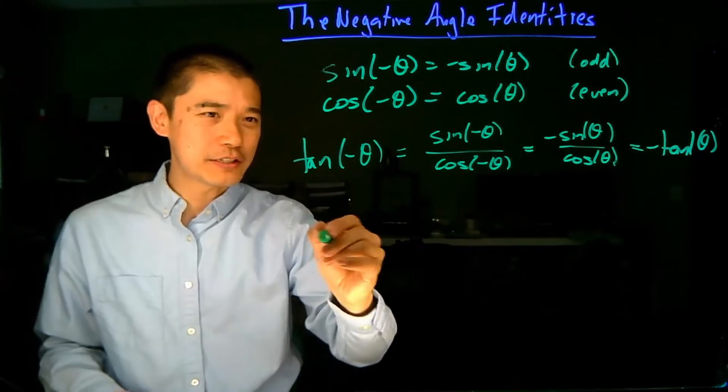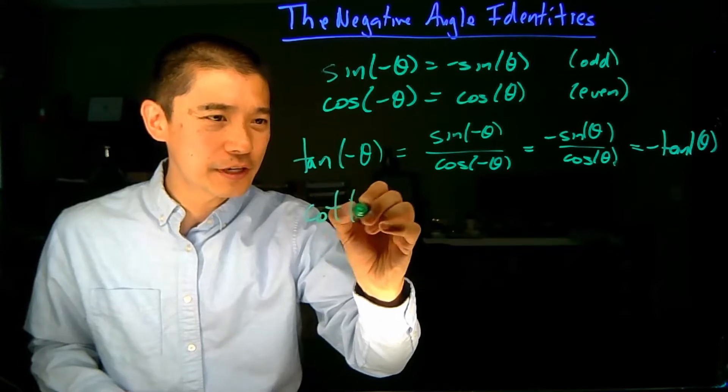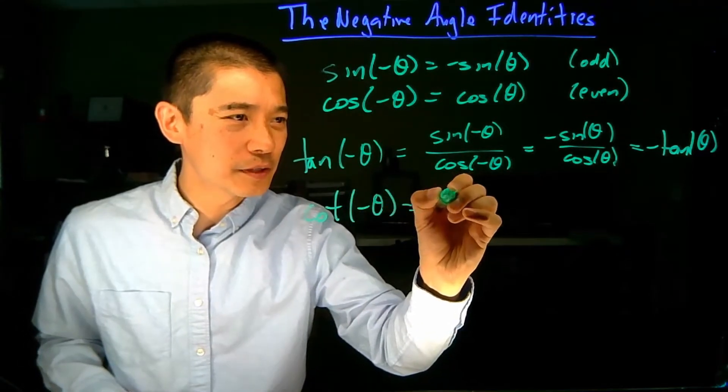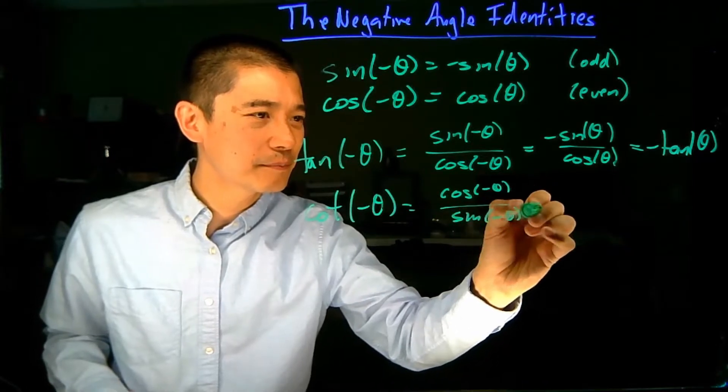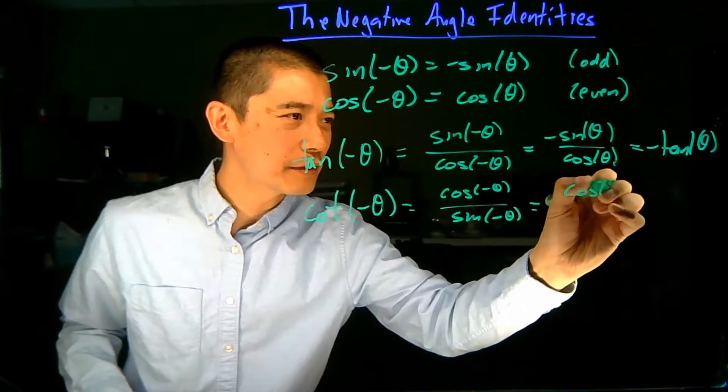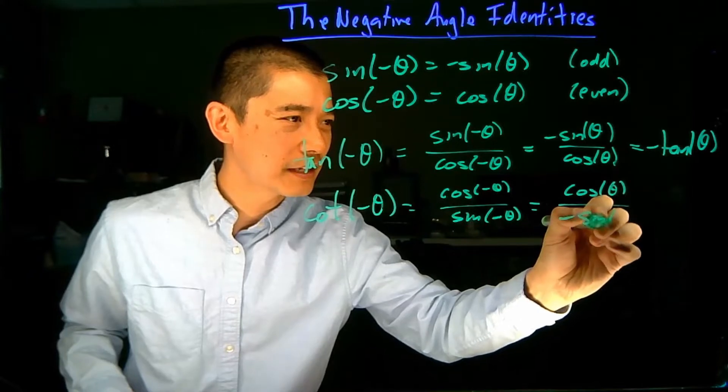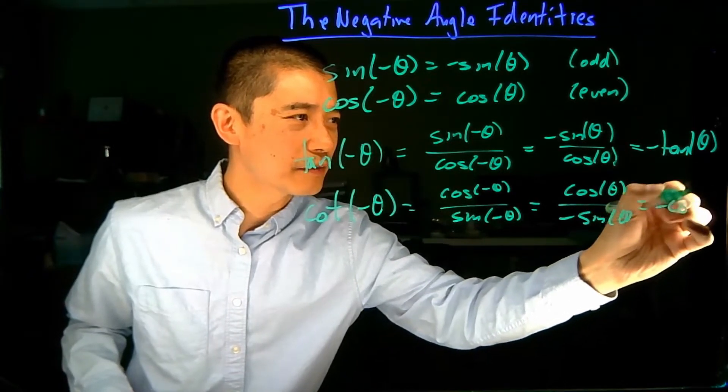We can work our way around the rest of these. I'm going to do them very quickly. So, cotangent of negative theta is going to be cosine of negative theta over sine of negative theta, which is going to be cosine of theta over negative sine theta, which is negative cotangent theta.